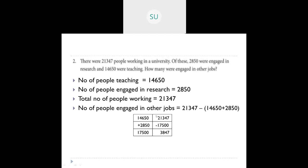Now subtract from total: 21,347 minus 17,500. Ones: 7−0=7. Tens: 4−0=4. Hundreds: 3−5 can't do, borrow — 13−5=8, thousands digit becomes 0. Ten thousands: 0−7 can't do, borrow — 10−7=3. So the number of people engaged in other jobs is 3,847.